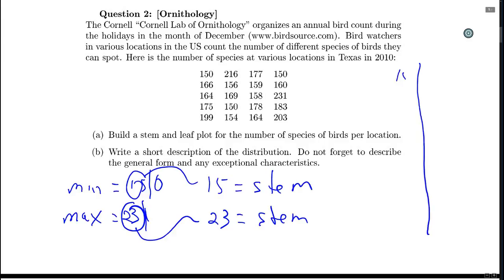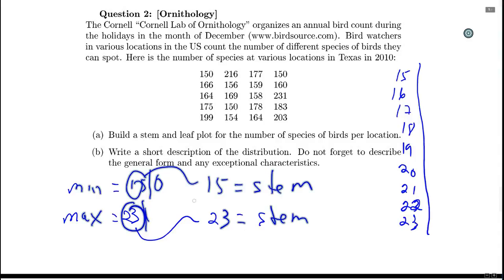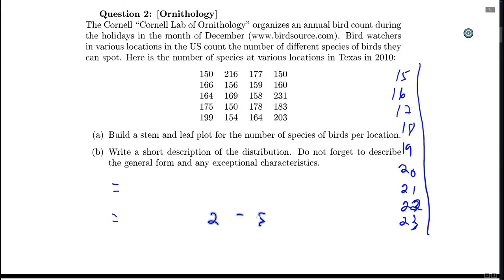I'll make a vertical bar and then I put my stems. So 15, 16, 17 and so on up to 23. And now what we need to do is put in our leaves. Now the problem here is that the values are not ordered in increasing order, and we would like to put our leaves in increasing order, so we have to be careful.